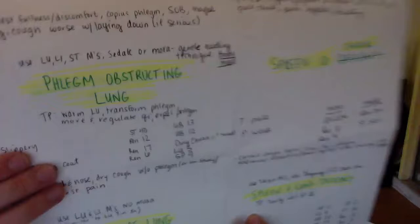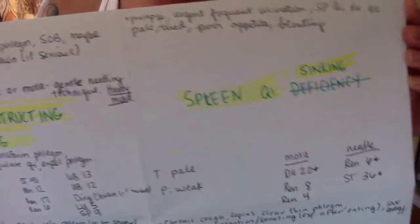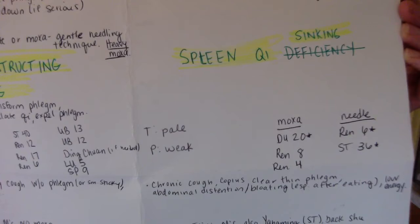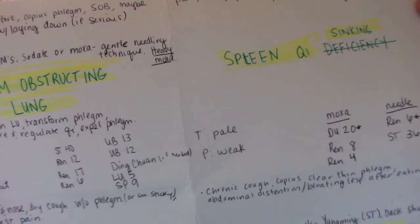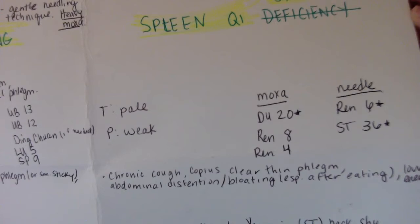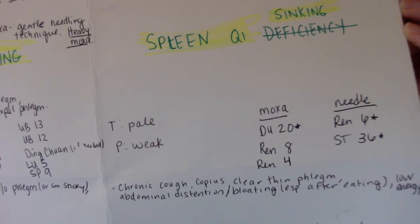Spleen chi sinking: the tongue is pale, the pulse is weak. For the points combination, only needle two points: needle ren six and stomach 36. Use moxa on dew 20, ren eight, and ren four.